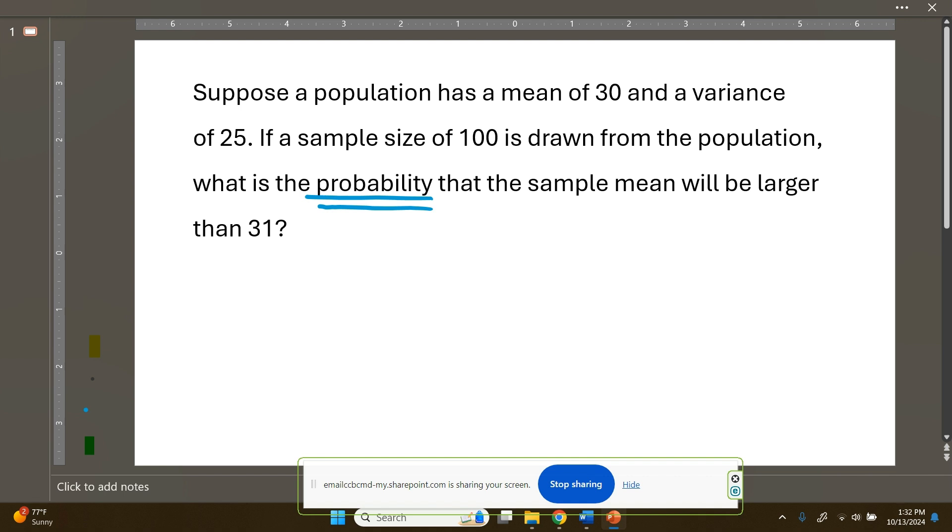So as I read it, I see that I have a population mean of 30. I have a variance, assuming it's still with the population, so sigma squared of 25. I have a sample size of 100. And they want to know what's the probability that the sample mean will be larger than 31. So that's x bar for sample mean, greater than 31.